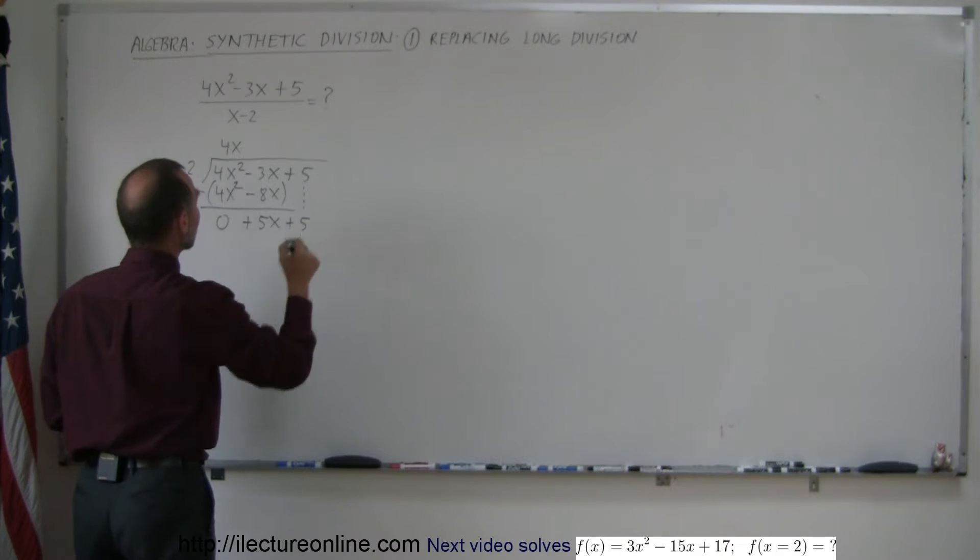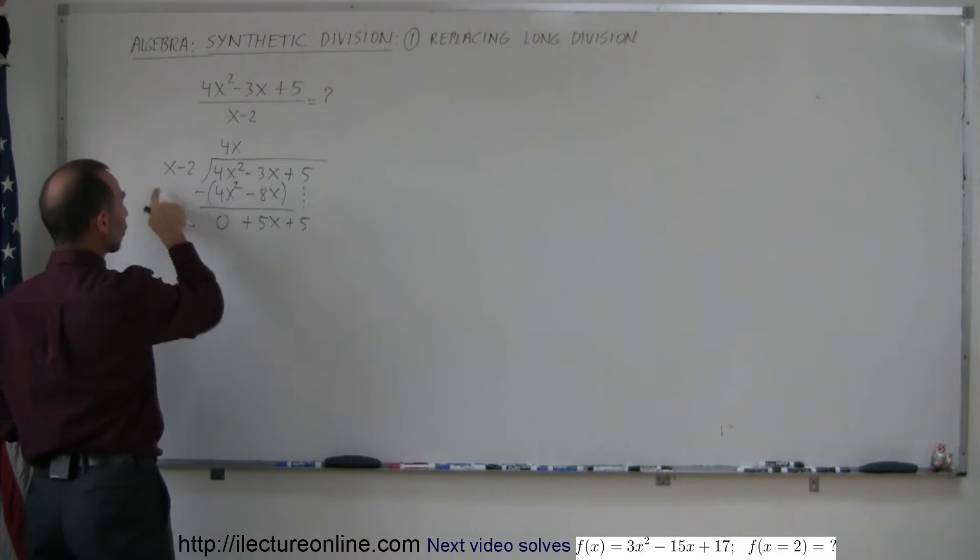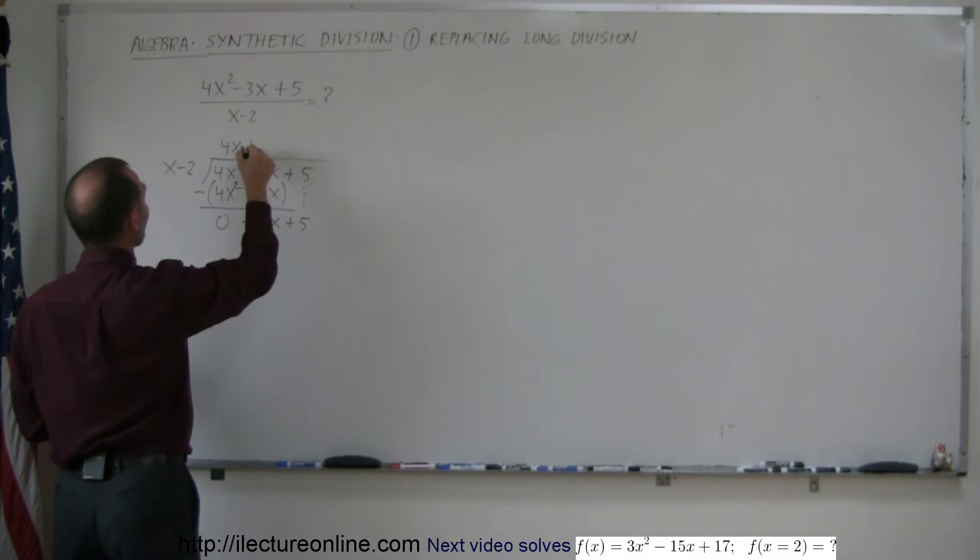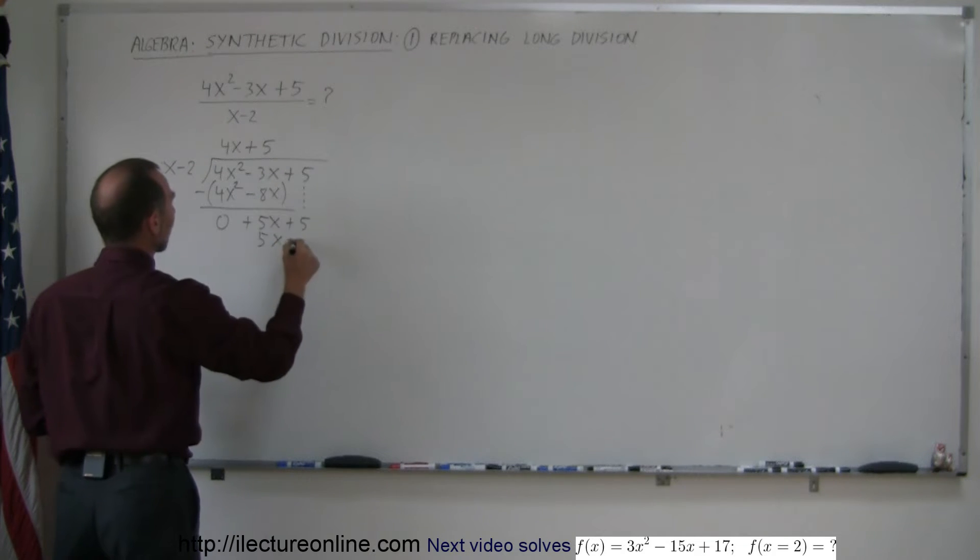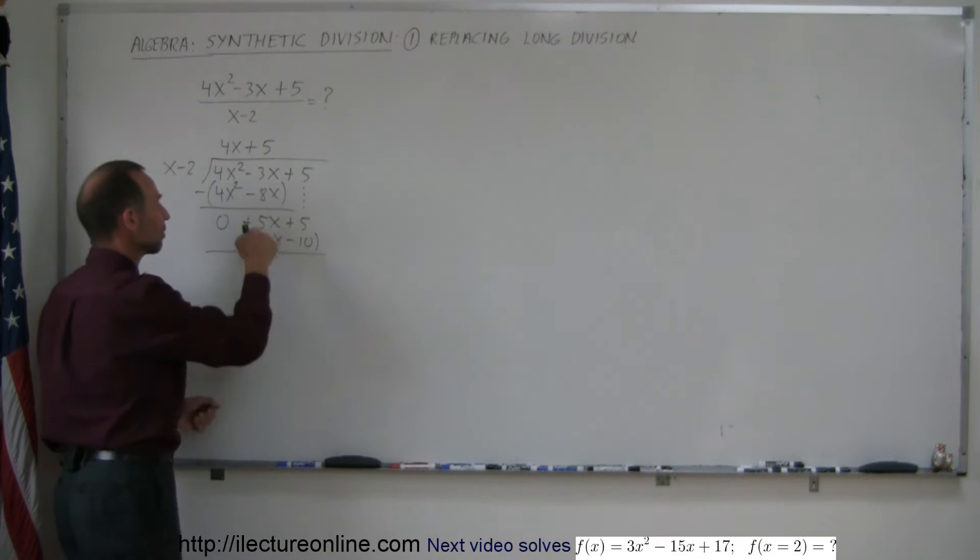And then we drop the next term. We get plus 5 and we do this again. How many times does x go into 5x? And the answer is 5 times. So 5 times x is 5x. And 5 times negative 2 is minus 10. Then we subtract these two terms from what we had above. And this minus this is 0.